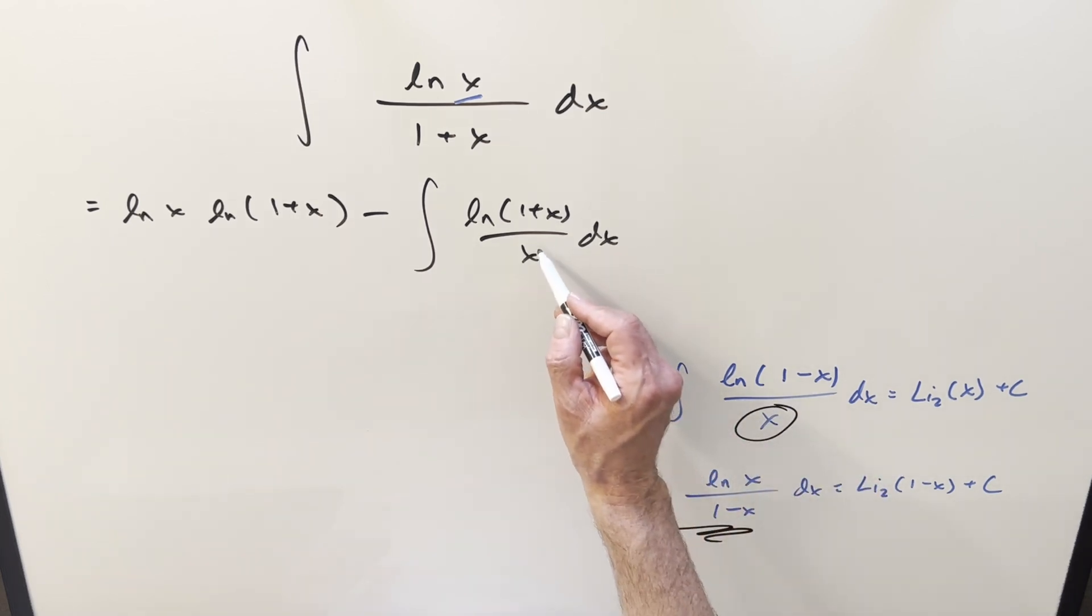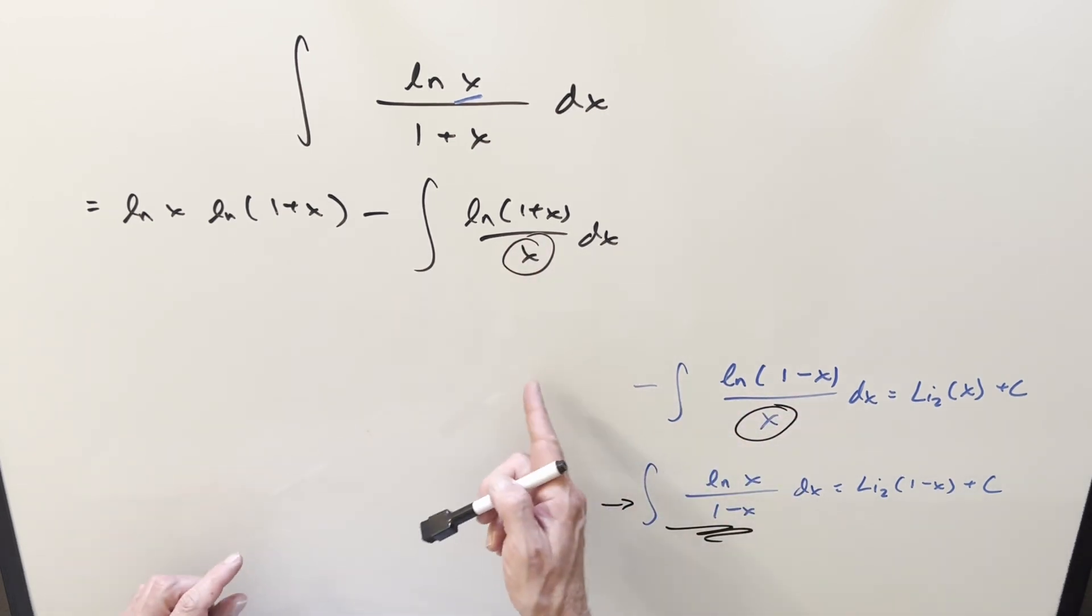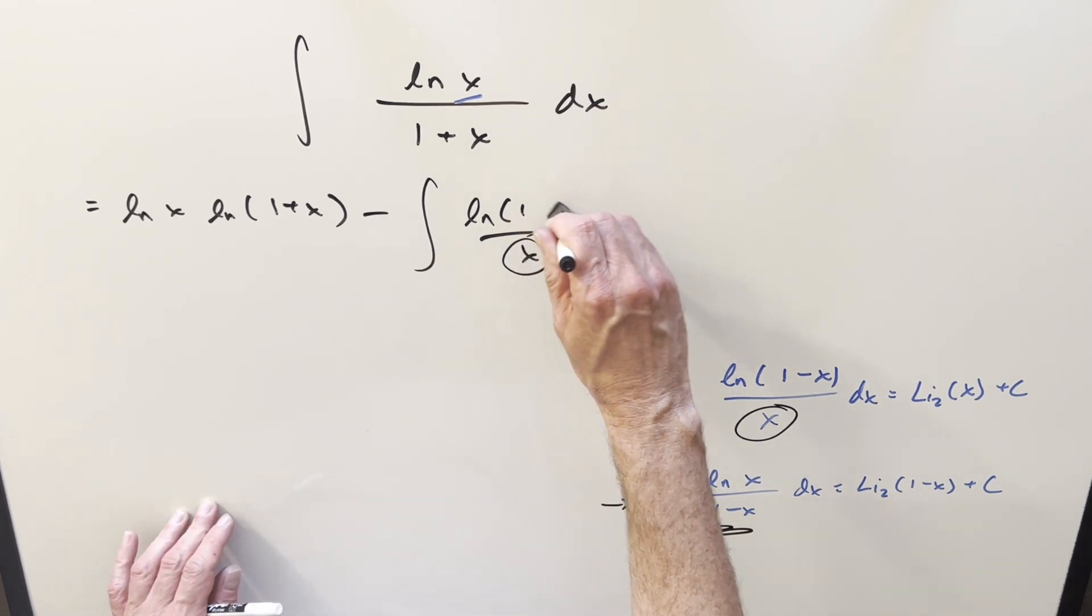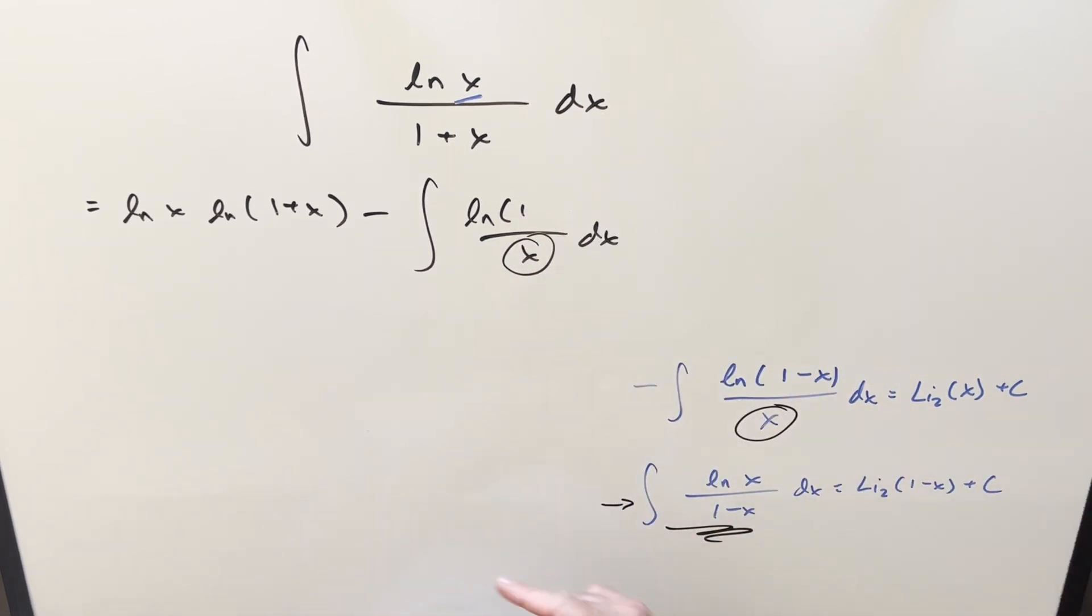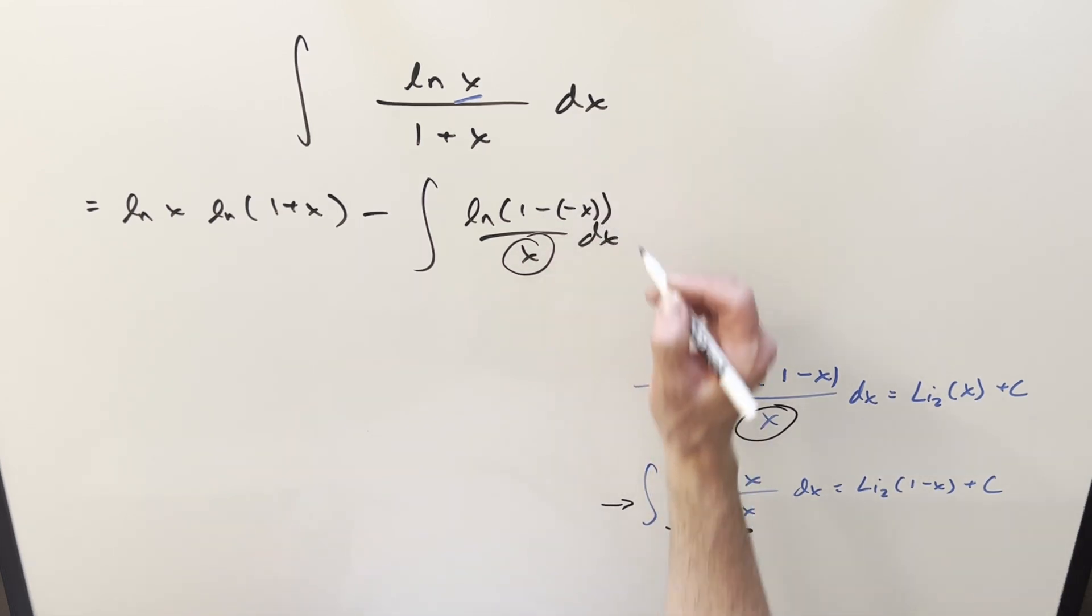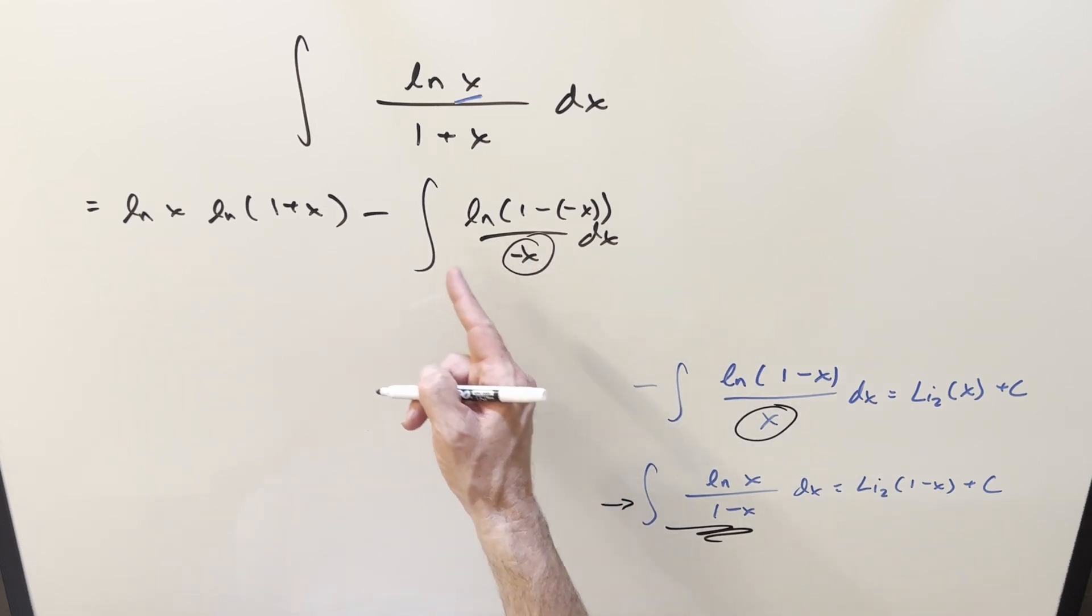So the way we can fix that is kind of create a minus, so our input's a minus sign. So I'm just going to rewrite this. So here, instead of writing this as one plus x, I can write it as one minus minus x, and then we can create the minus sign here, but I don't want to change it. We bring a minus sign out front, change this to a plus.